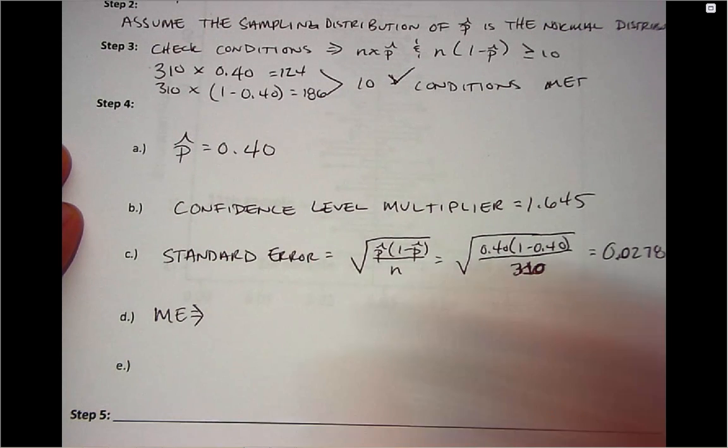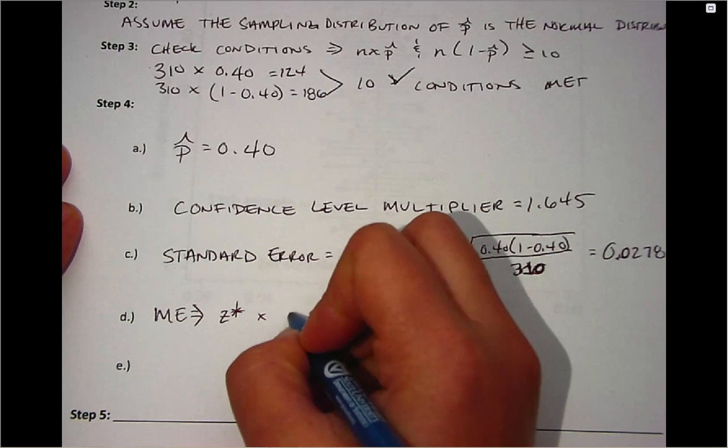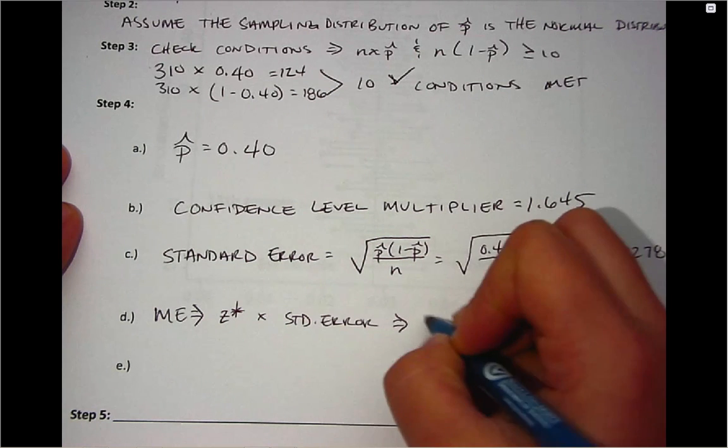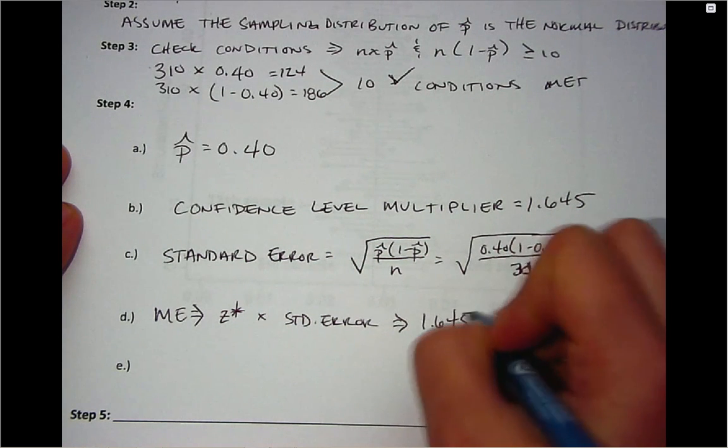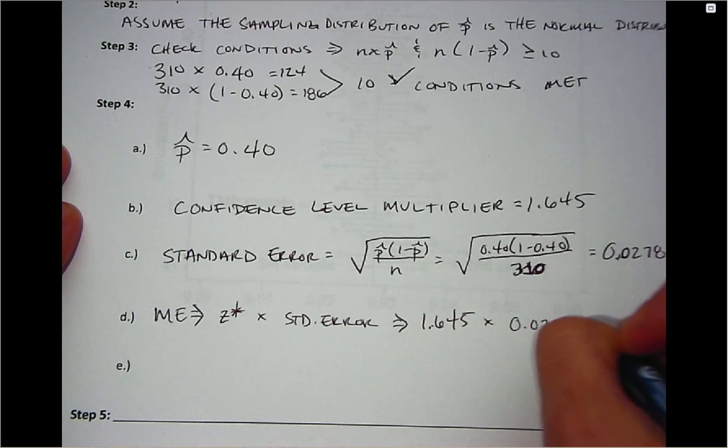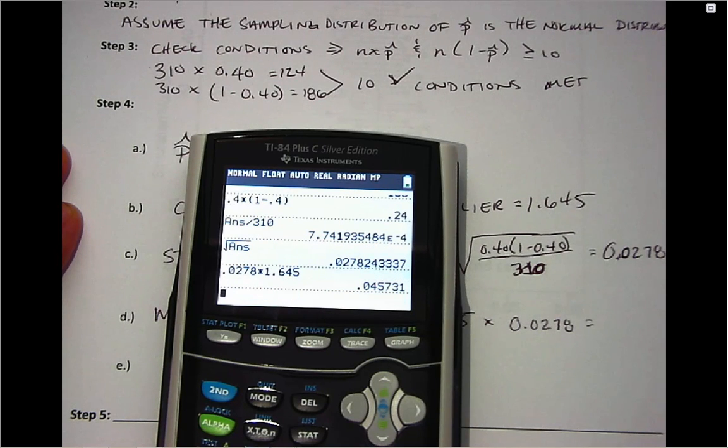Next we'll calculate margin of error, which remember is the Z star times standard error. And so here we have a Z star of 1.645 and then we just calculated standard error to be 0.0278. So we come up with a margin of error equal to 0.0457.